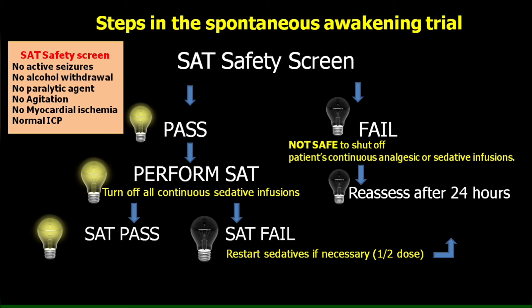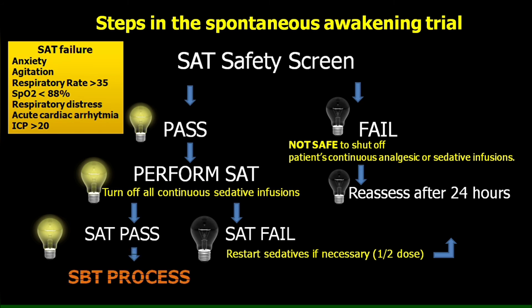If the patient passes SAT, the SBT — spontaneous breathing trial — process is applied. The SAT failure criteria include: anxiety, agitation, respiratory rate more than 35, SpO2 less than 88%, respiratory distress, acute cardiac arrhythmia, and intracranial pressure more than 20. When all these criteria are absent, the patient has passed the SAT process and is ready to proceed to SBT.